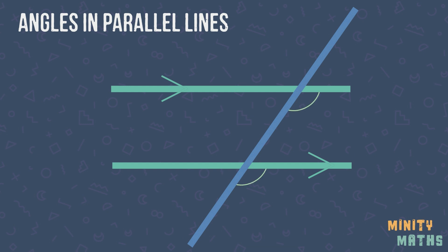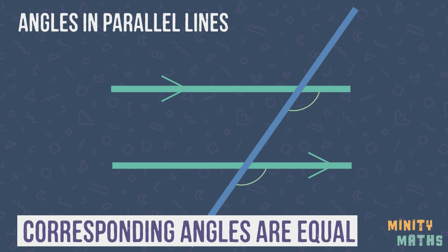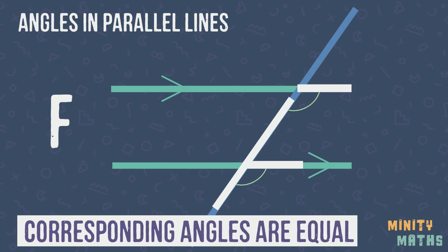Corresponding angles are also equal, and these can be found within an F shape. Note that the F can also be facing backwards.